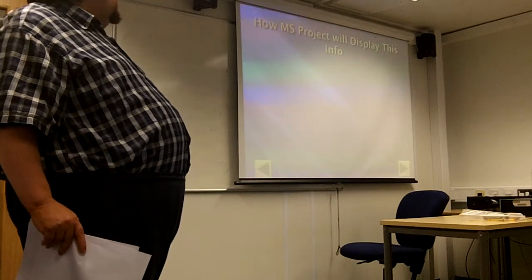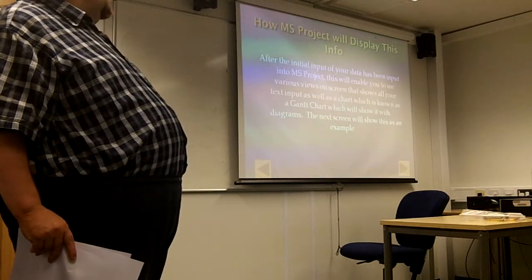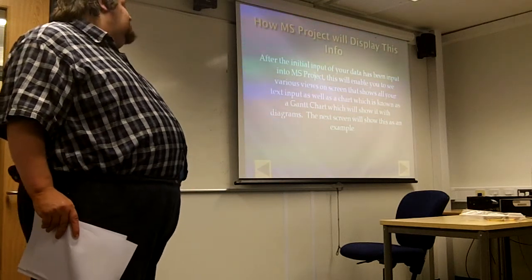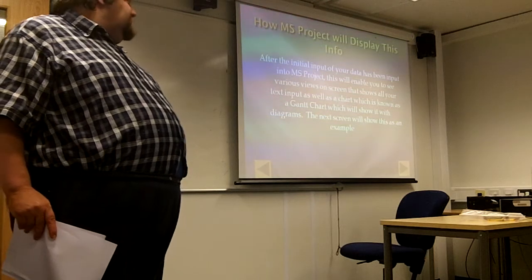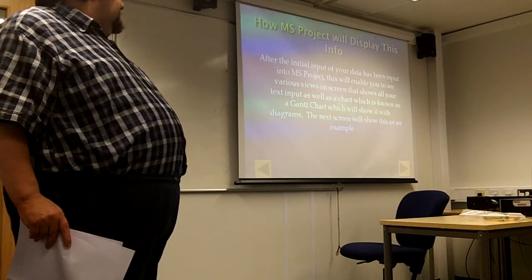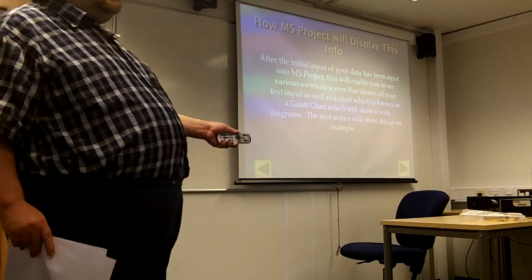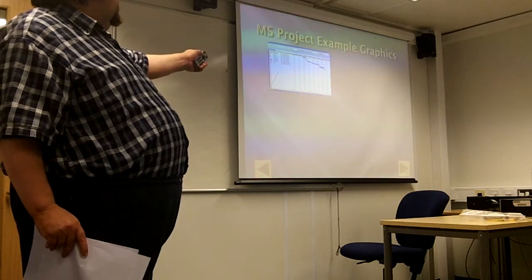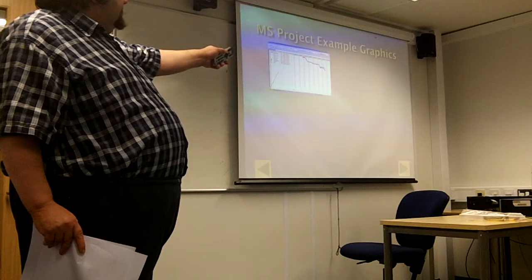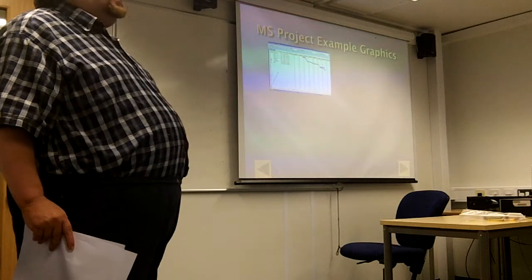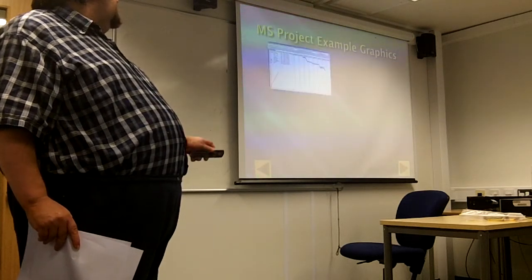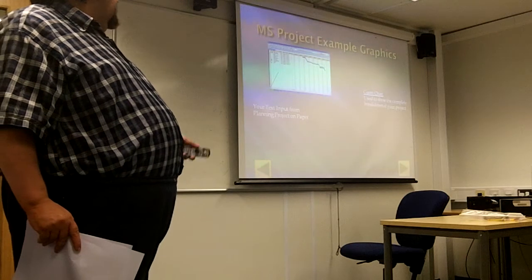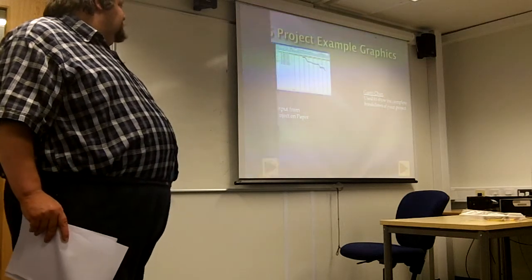Looking at the actual software and how it displays the information — it shows various views. It shows all your text input, and it shows all your data on a chart known as a Gantt chart. It also shows relevant diagrams. As you can see, you have your text data on the left-hand side and on the right-hand side it is shown as a Gantt chart, giving you the complete breakdown of your project. The text input comes from everything you put in during the planning stage.